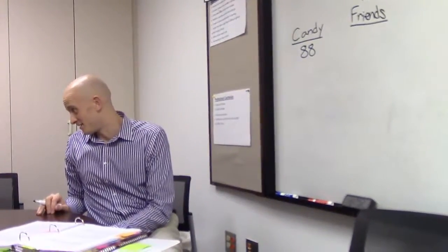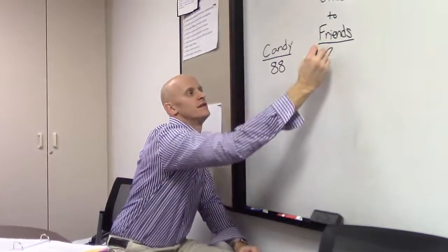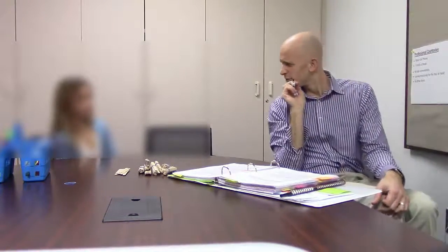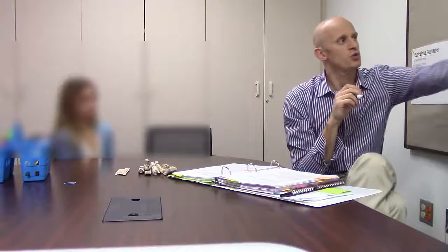Miss Thomas has 88 pieces of candy, and she is so nice she's going to give her friends 20. Miss Thomas has 88 pieces of candy and she is going to give her friends 20. Take some time to think and then give me a thumbs up. 68. Talk to us about 68. 88 minus 20 equals 68. So 88 subtract 20 equals 68.